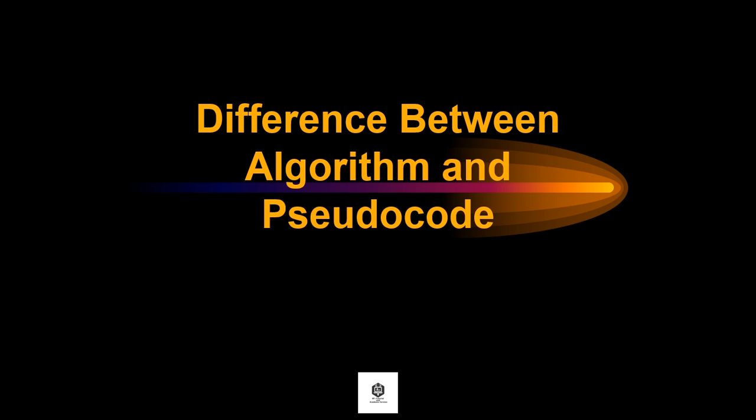Hello everyone! Today we will have a new lesson about the difference between algorithm and pseudocode. The main difference between algorithm and pseudocode is that an algorithm is a step-by-step procedure to solve a given problem, while a pseudocode is a method of writing an algorithm.